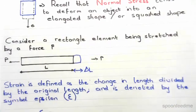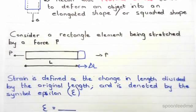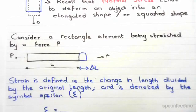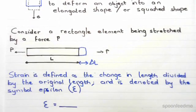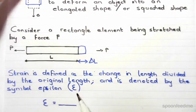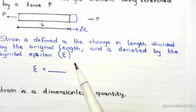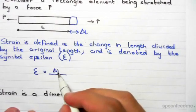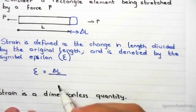Now this is strain. And strain can be defined as the change in length, so the blue region shown, divided by the original length, and is denoted by the symbol epsilon. The equation of strain is delta L over its original length L.